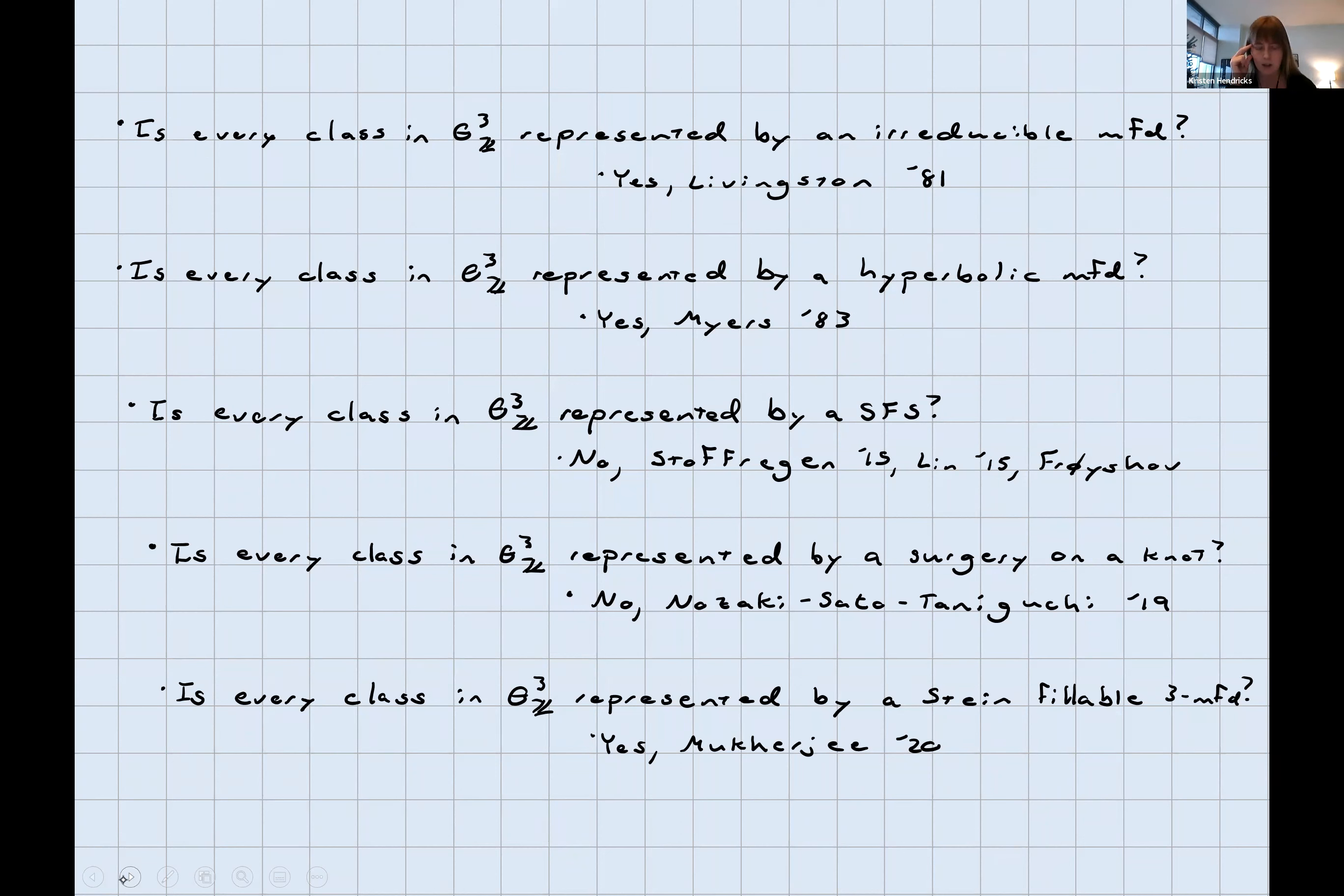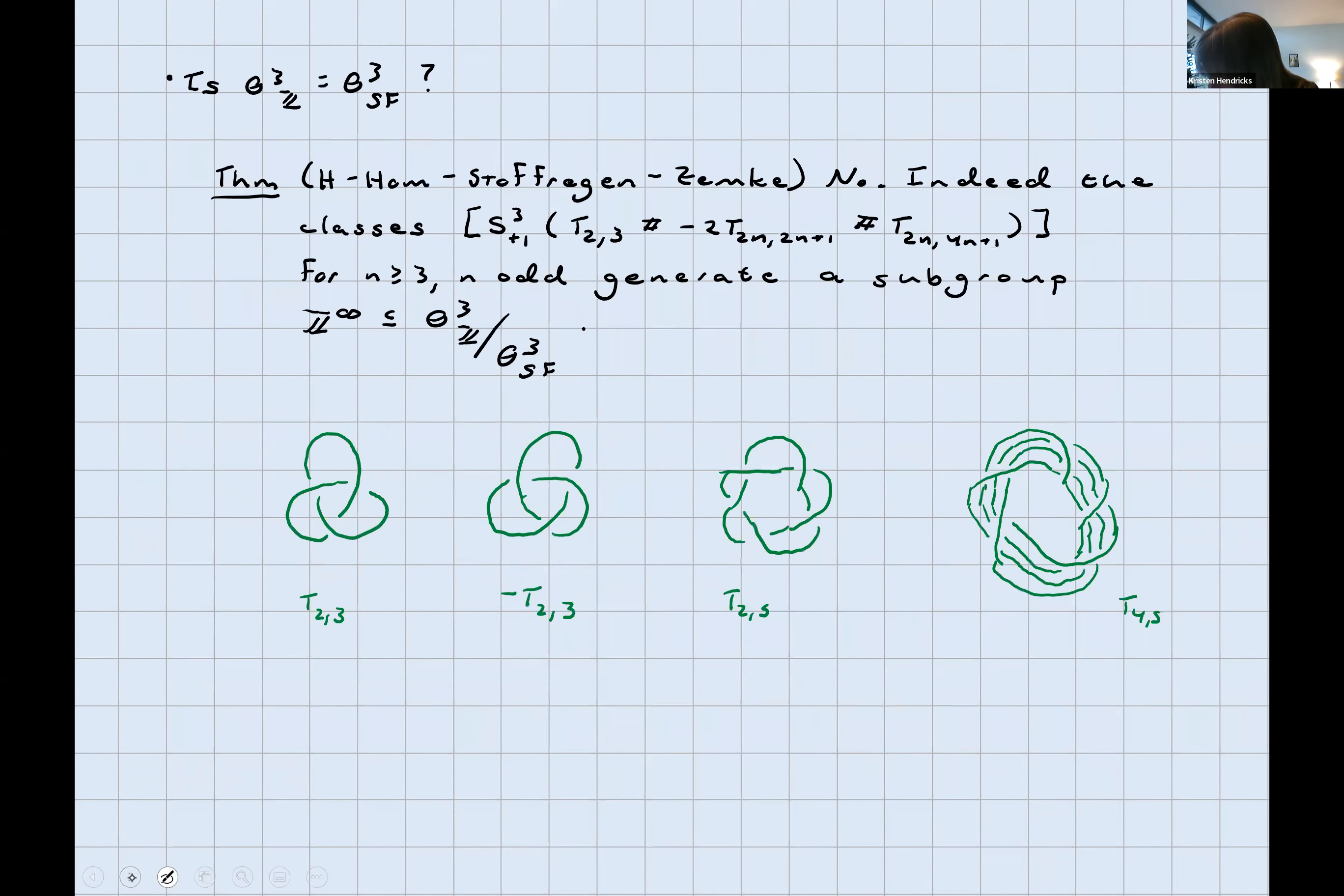So the next question is, is everything homology cobordant to surgery on a knot? This was recently answered in the negative by Nozaki, Sato, and Taniguchi using filtered instanton homology. Another nice recent result is, is everything represented by a Stein-fillable manifold? Answer turns out to be yes. Recent work of Merkurjev. Going back to this question for just a moment, once you know that not everything is homology cobordant to a Seifert-fibered space, you can ask if the classes represented by Seifert-fibered spaces generate the group, which is the same question as, is everything homology cobordant to a linear combination of Seifert-fibered spaces with some orientations?